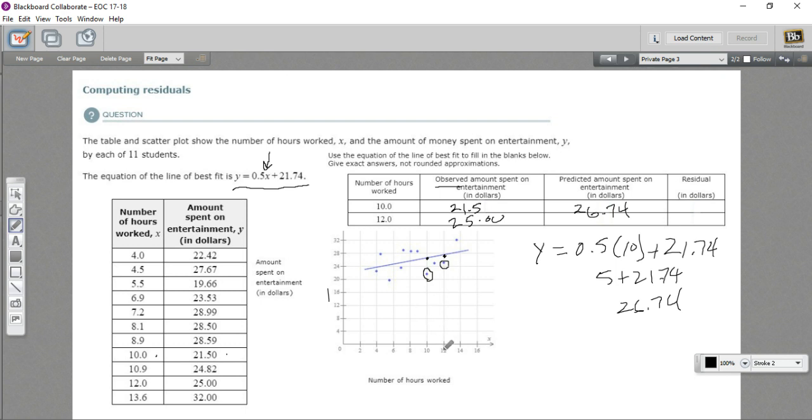And for 12, we're going to have 0.5 times 12 plus 21.74. And this is 0.5 times 12 is 6, so this is 27.74.